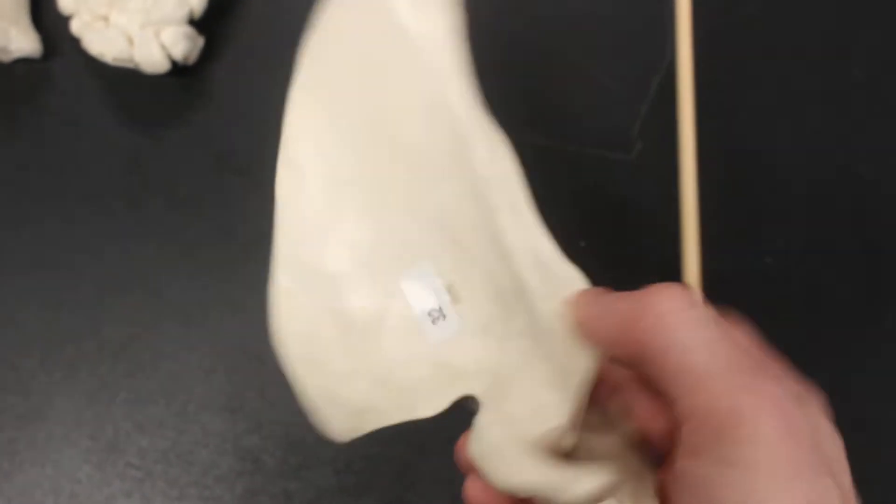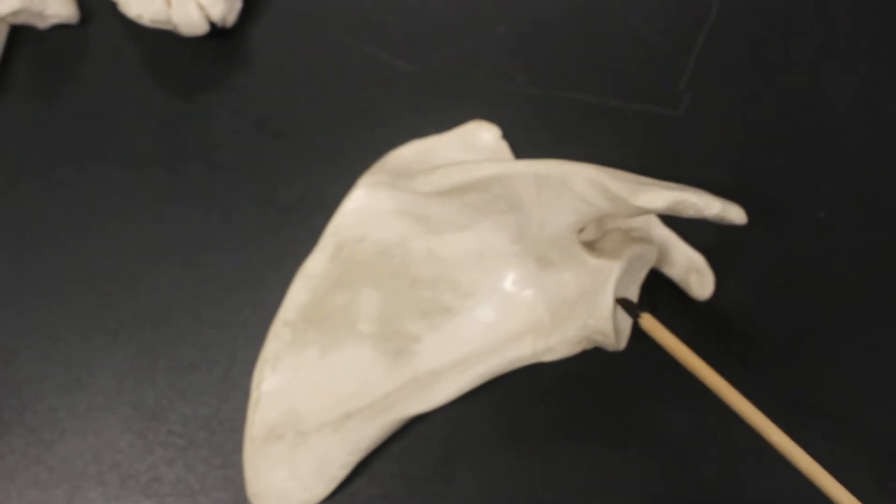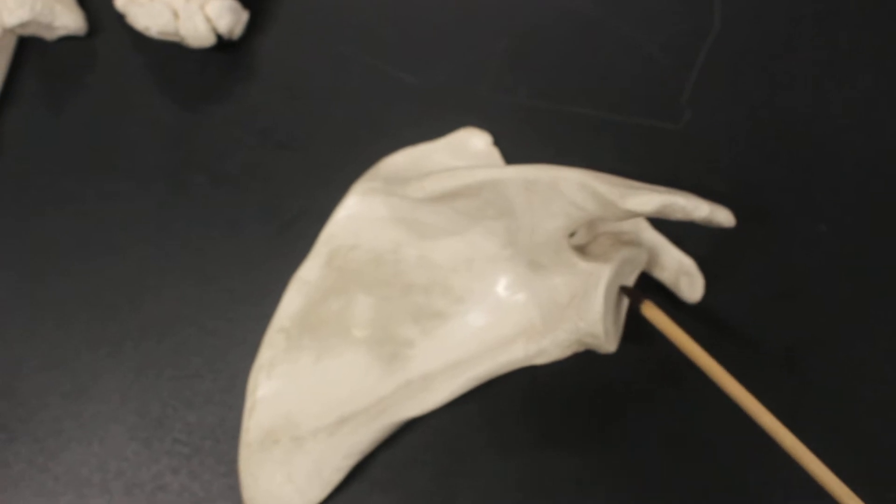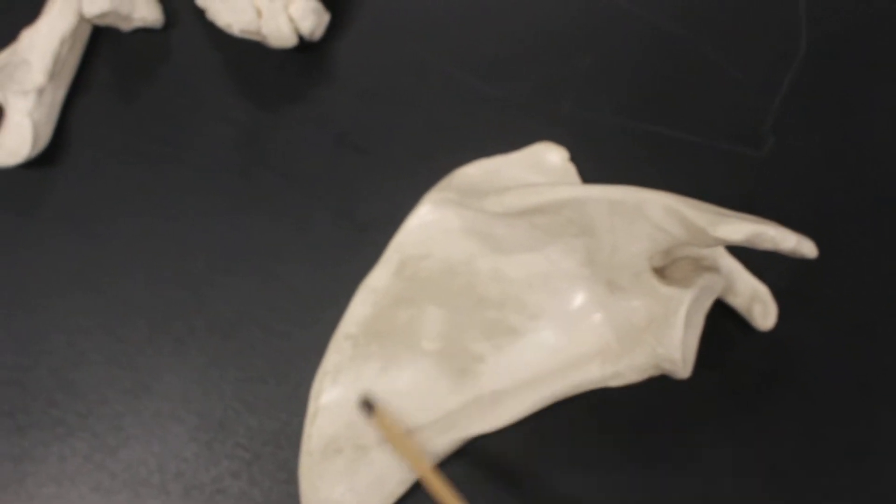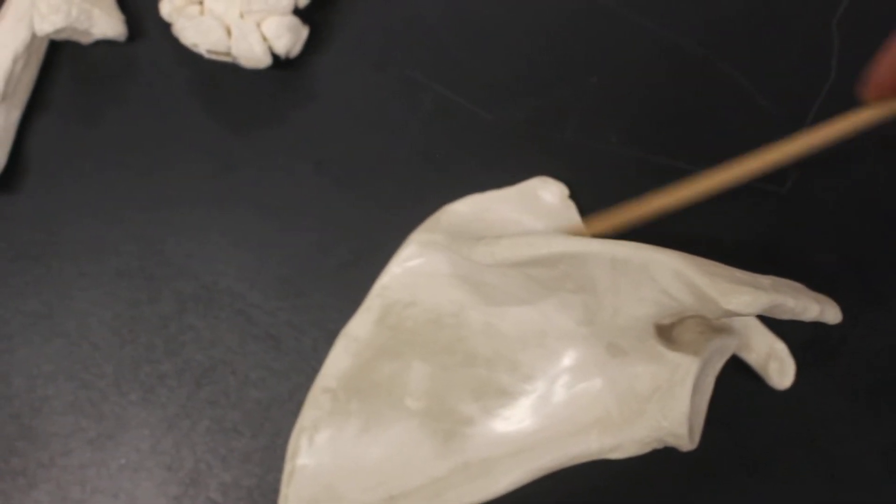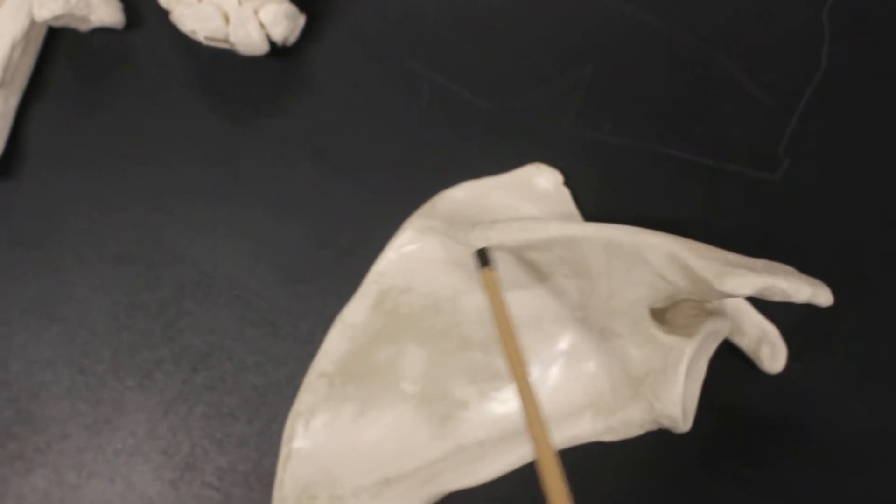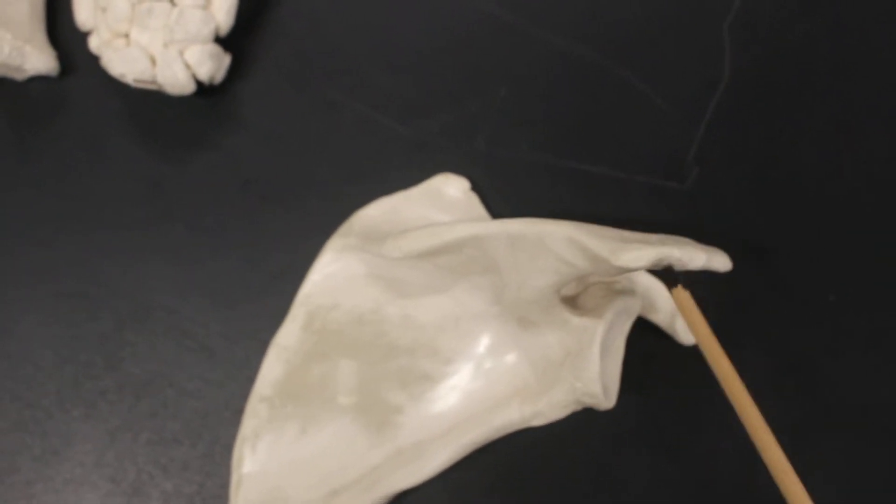Over here, this bone here is the scapula. Scapula, we have the glenoid cavity. We also have the infraspinous fossa and the supraspinous fossa. They're above and below the spine. Spine ends in this piece here, which is the acromion.